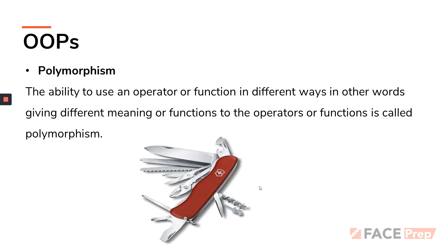One more example is the Swiss knife, which you can see on the screen. It is basically a knife but it has multiple tools in it — if you want to open something it has an opener, if you want to tweak something it has a tweaker, tweezers, and all that. This is a multi-purpose knife basically called a Swiss knife.